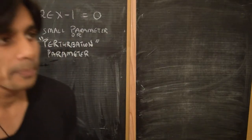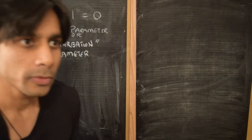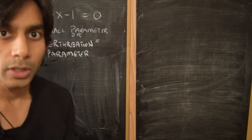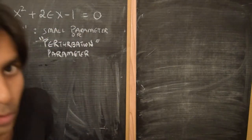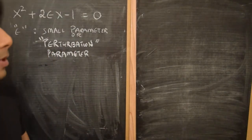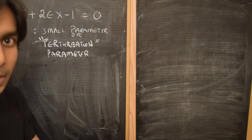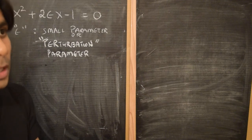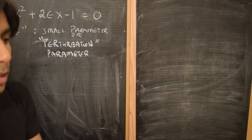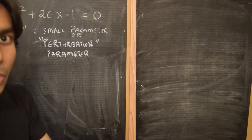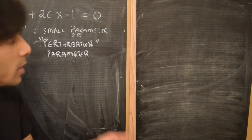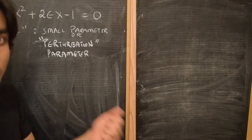Hi. So if you've seen the previous video, we solved this quadratic equation x squared plus 2 epsilon x minus 1 equal to 0 exactly. And then what we did was we approximated the exact solutions of this equation in the form of a power series representation in powers of the small parameter epsilon.